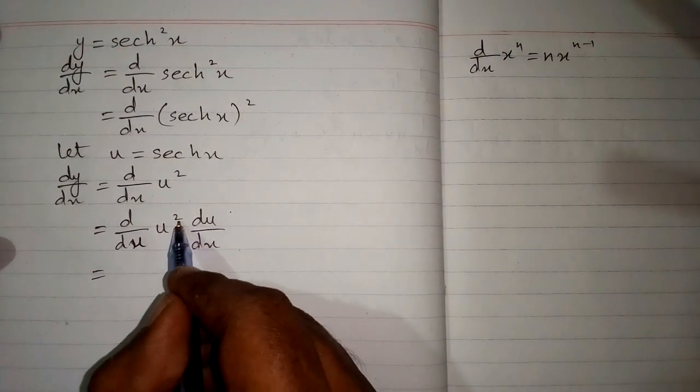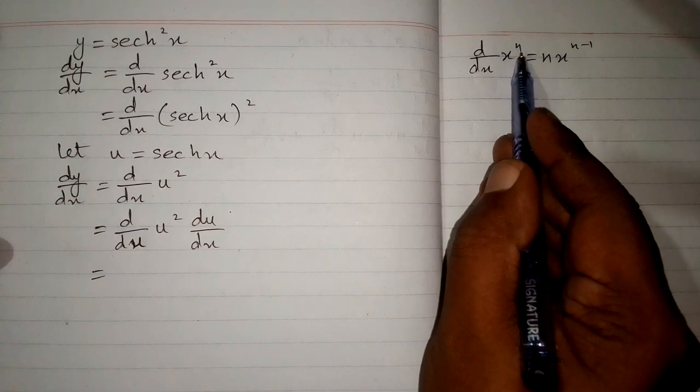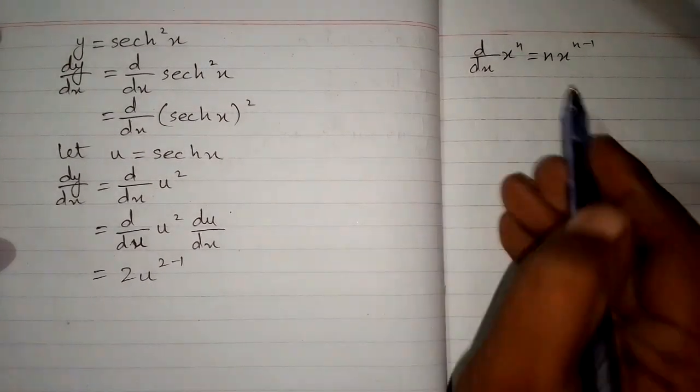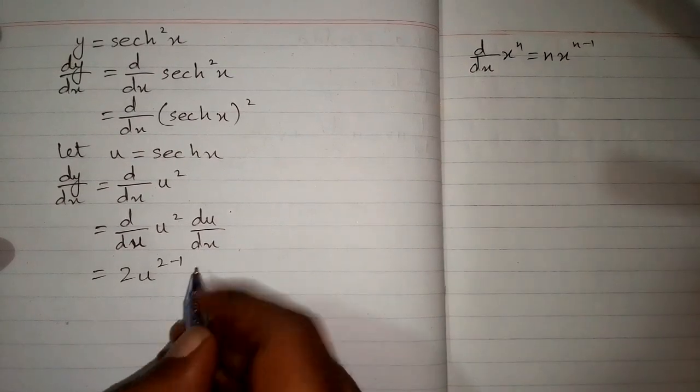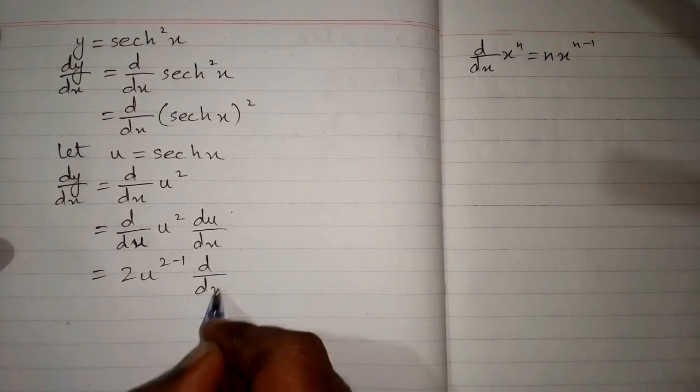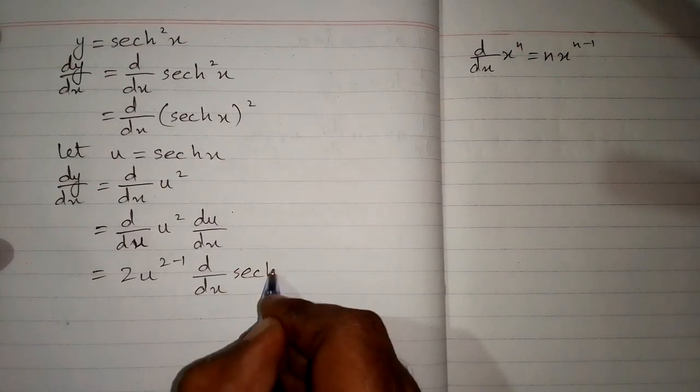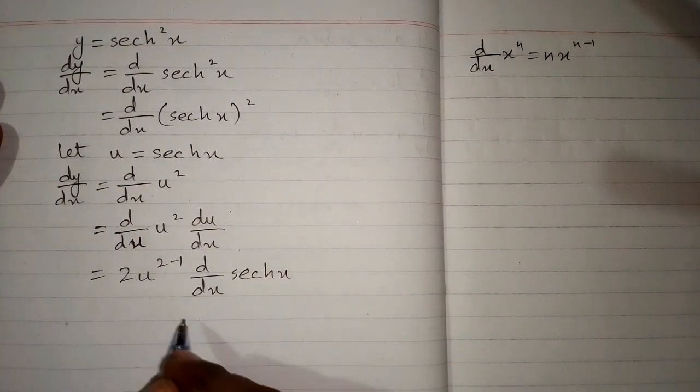We can see that we have n equals 2 in this case. So first we write 2, then u^(2-1) following the formula. And du/dx where u is hyperbolic sech x.